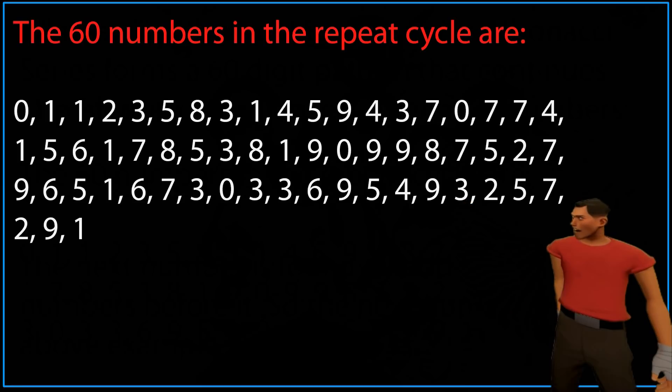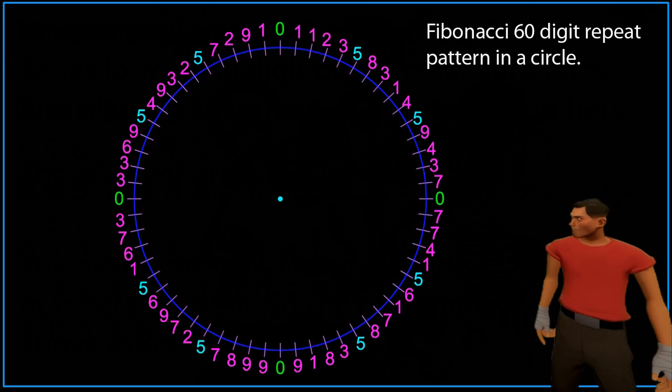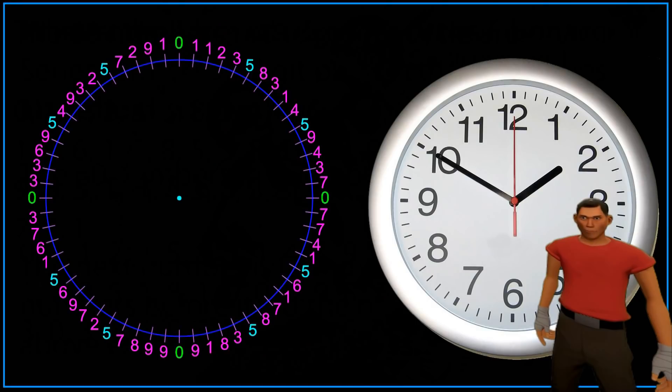But what nobody had thought about doing was taking these 60 digits and placing them around the circumference of a circle like you would do with the 60 seconds on a standard clock. It seems like such an instinctive idea, but nobody had thought about it until I came along.